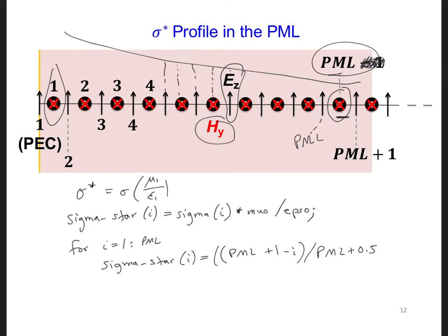And this to the power m, and that multiplied by sigma max. And now we have to scale it for the sigma star, so this is going to be times mu naught and divided by epsilon naught. And we can end the loop.